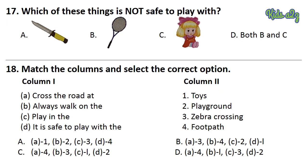Question 17: Which of these things is not safe to play with? The answer is Option A — Knife. Question 18: Match the columns and select the correct option. Please look at the columns carefully. The answer is Option B — that is, A3, B4, C2 and D1.